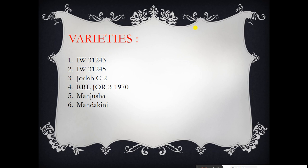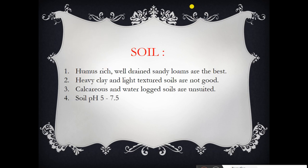The important varieties of citronella grass are: first IW 31243, second IW 31245, third Jarlove C-2, fourth RRL Jor (Jarlove 3-1970), fifth Manjusha, and sixth Mandaki.